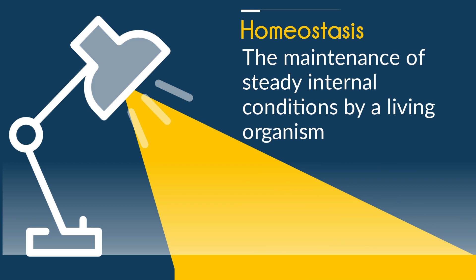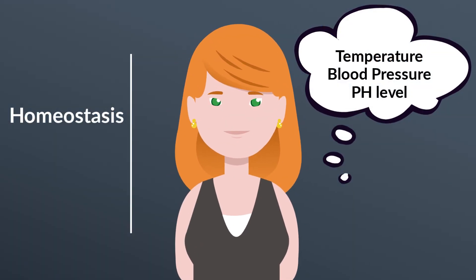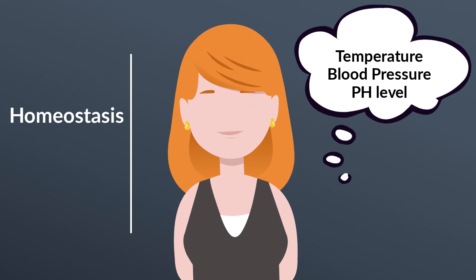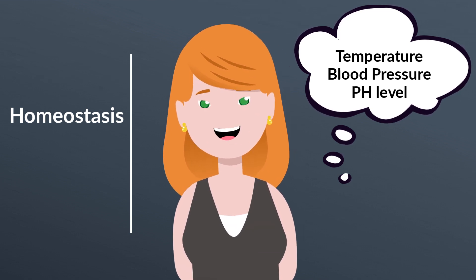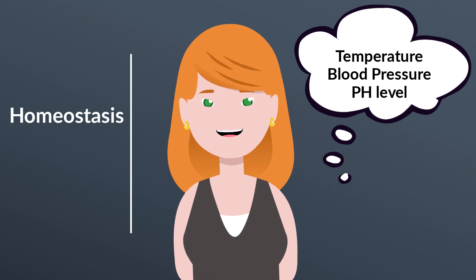Homeostasis is the maintenance of steady internal conditions by a living organism. Some common examples for us is your temperature, your blood pressure, and the pH level of the plasma. Your body keeps them at a steady rate.